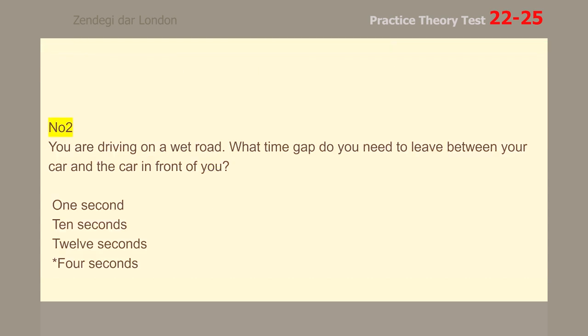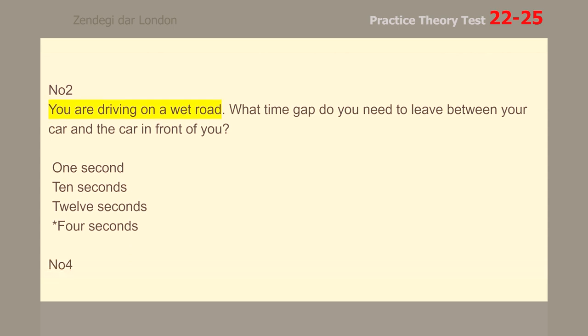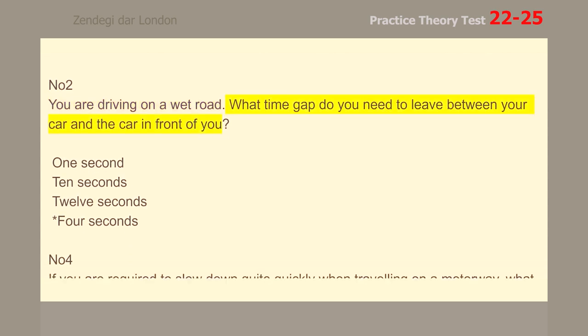Number 2. You are driving on a wet road. What time gap do you need to leave between your car and the car in front of you? 4 seconds.